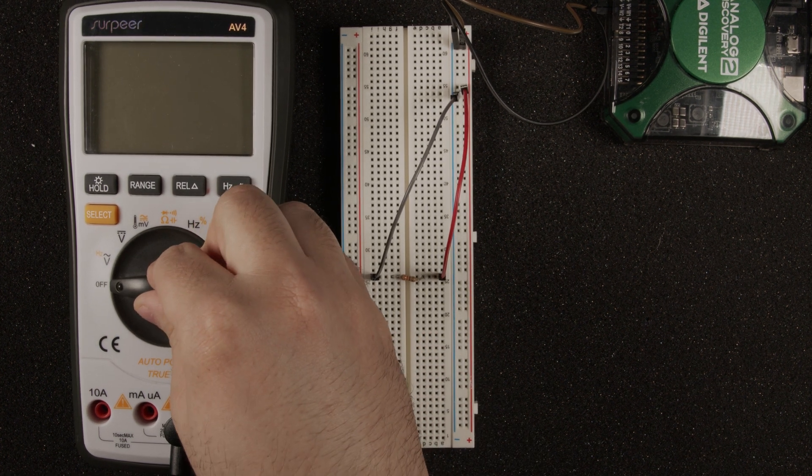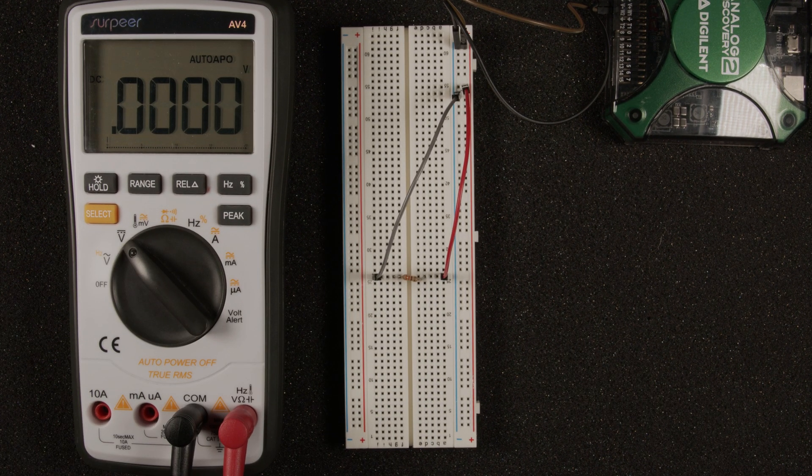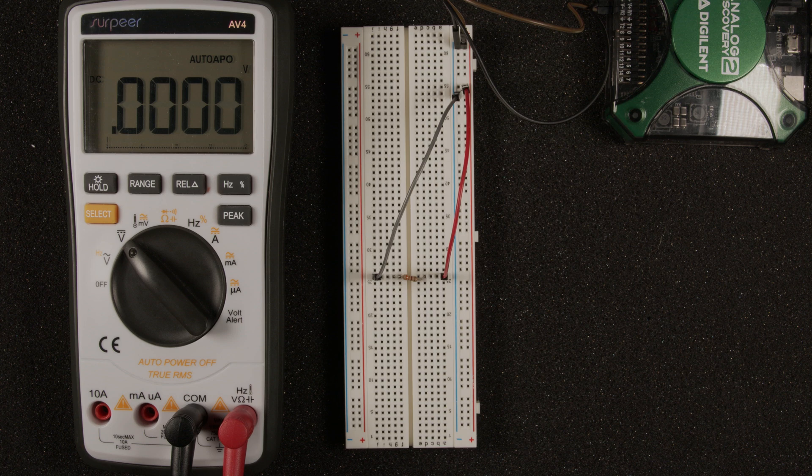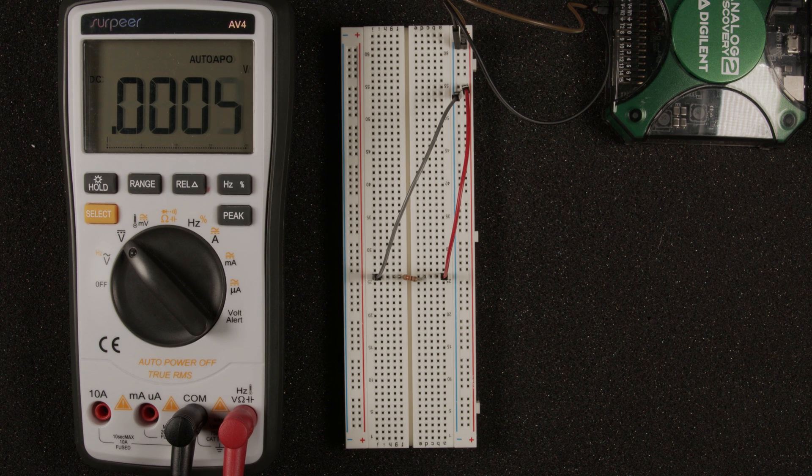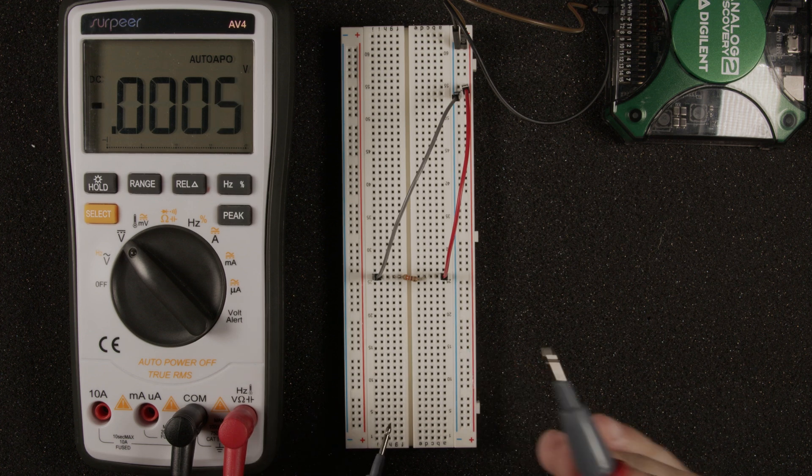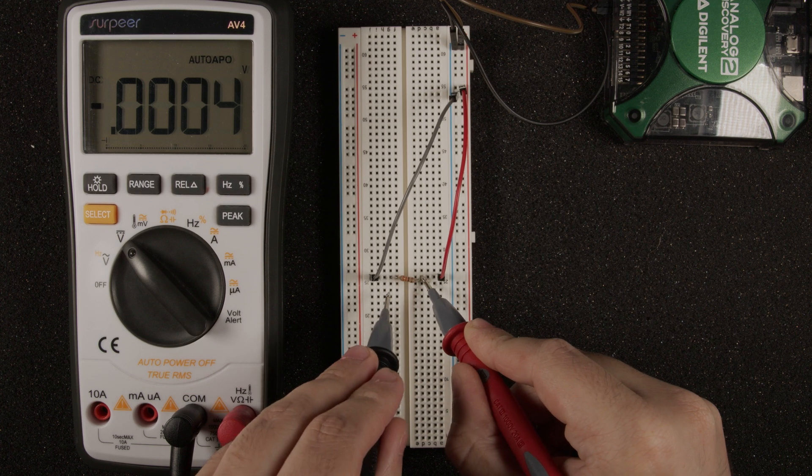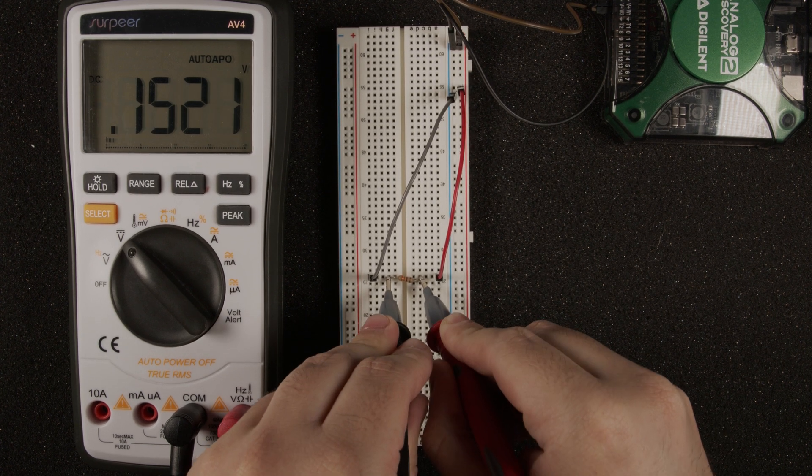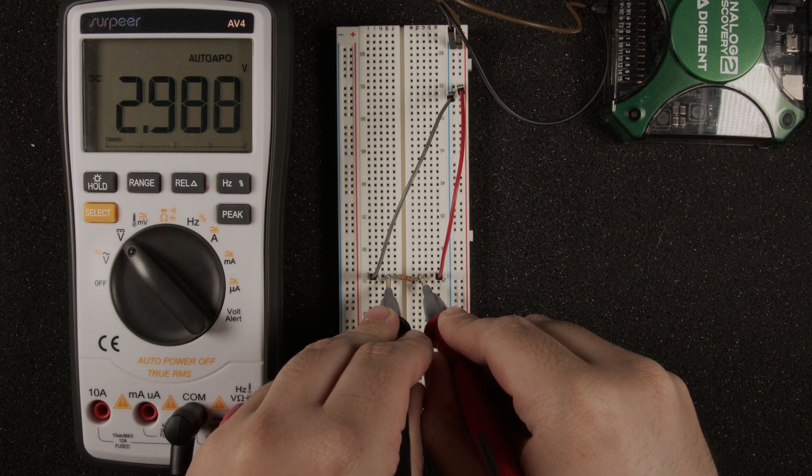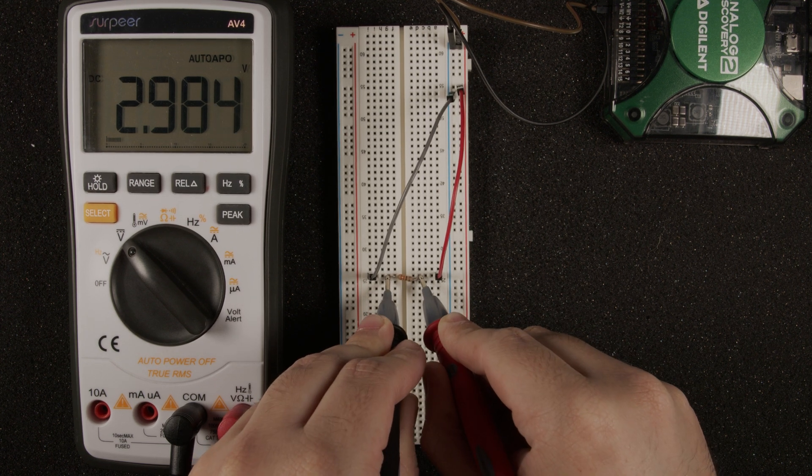Next we need to select the DC voltage function on our multimeter. To do this we're going to turn this dial until we have the V with the line and the dotted line above it selected, and this stands for DC voltage. With our probes in hand we're going to very carefully make the first connection on one side of the resistor by pressing it against the exposed metal part, and we're going to do it with the other side. And as we can see we have a 2.9, essentially a 3 volt voltage across this resistor.